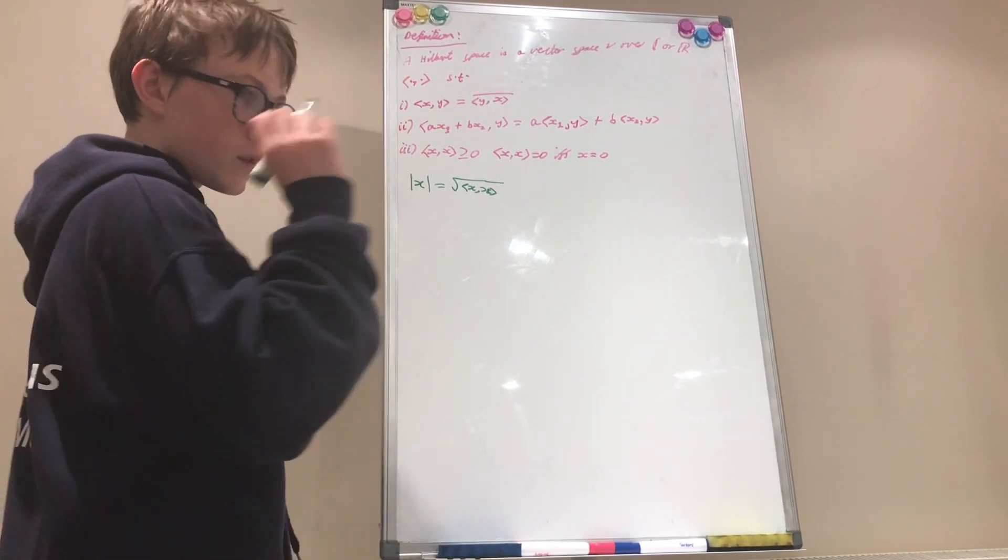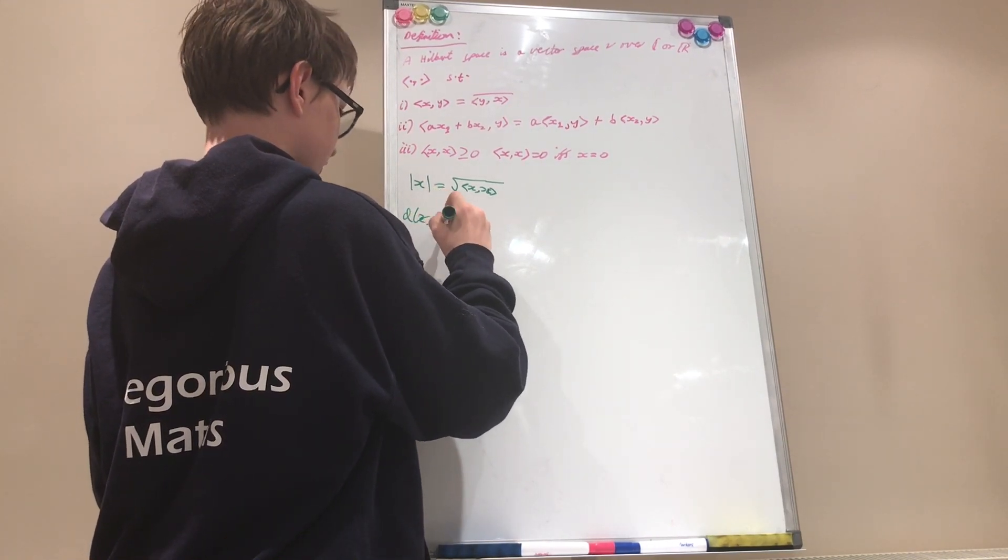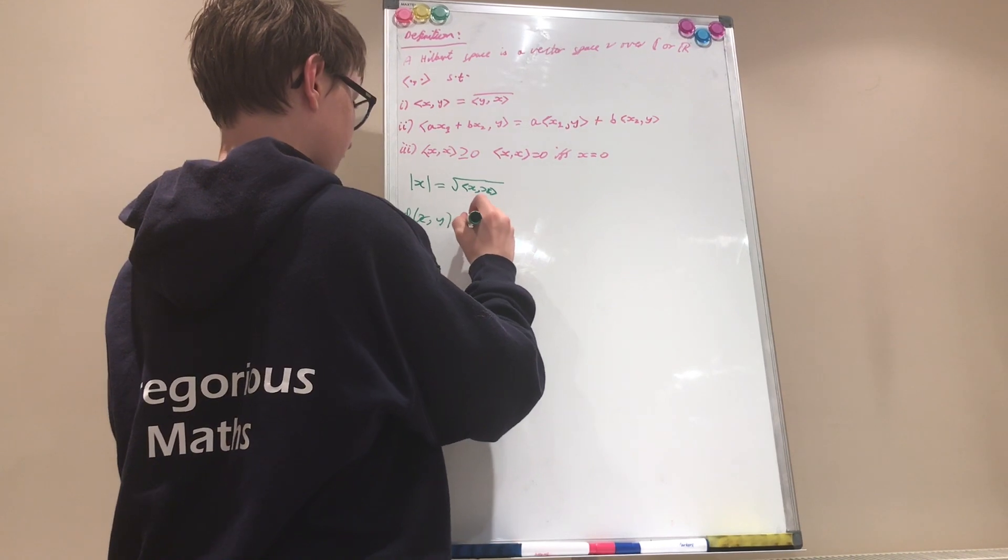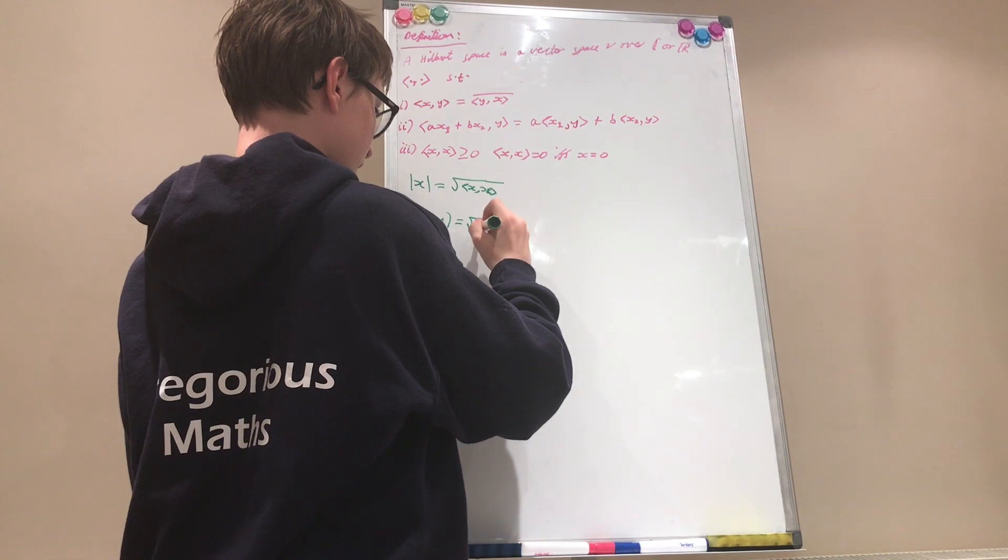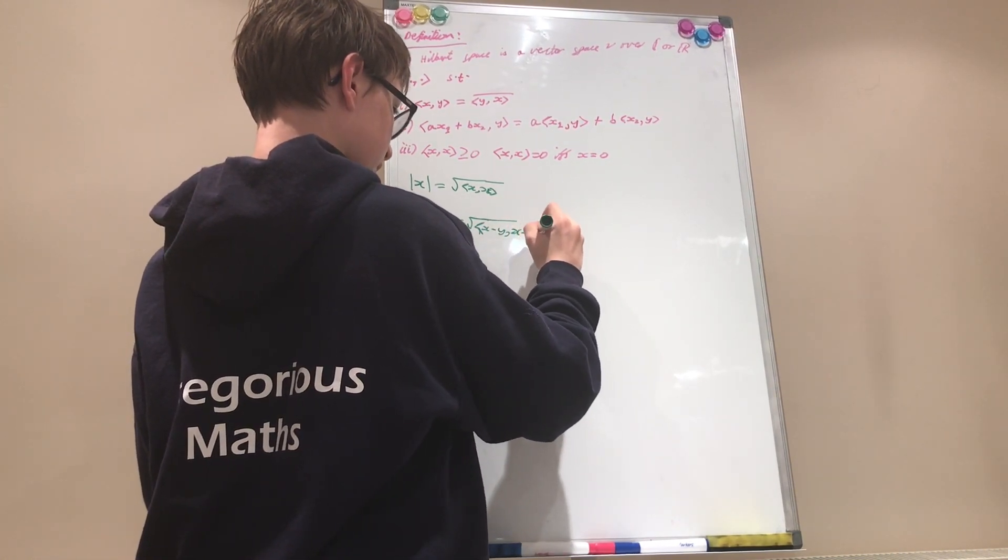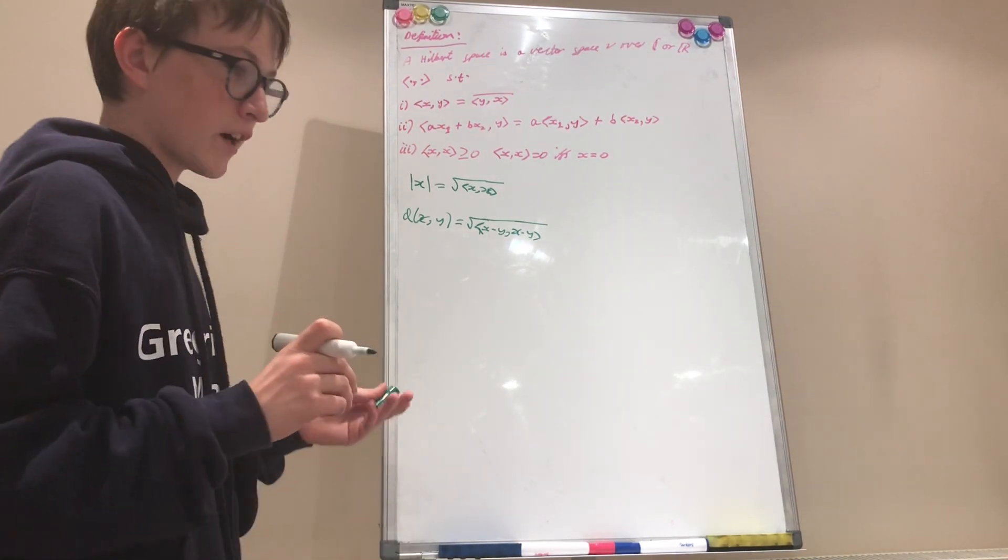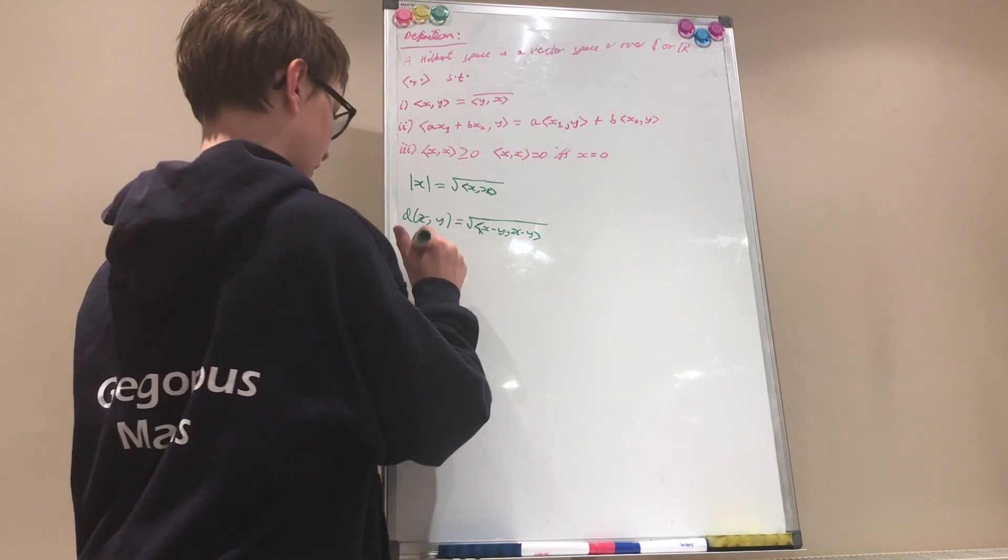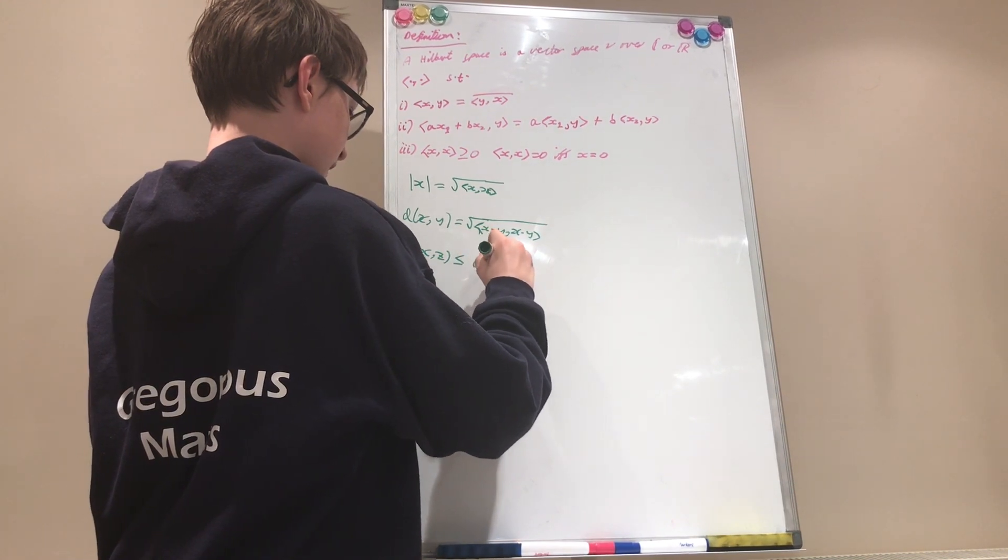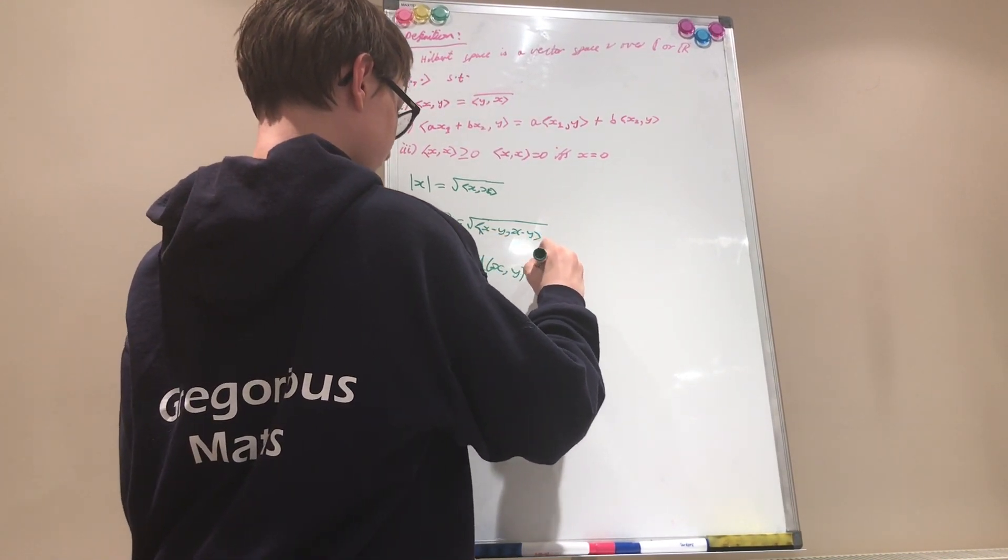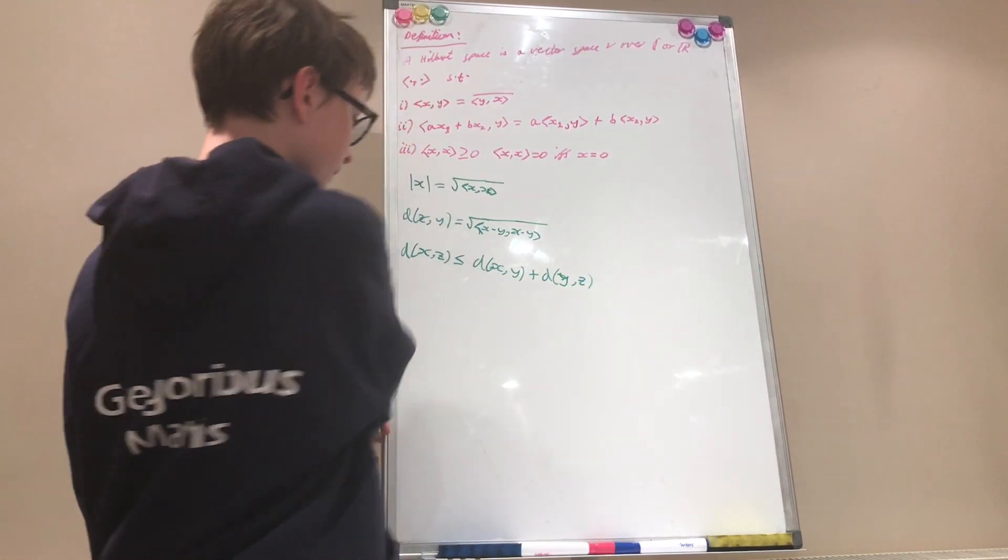Now we can actually define a distance function, distance metric, whatever you want to call it. d(x,y) is equal to the square root of (x minus y) inner product (x minus y). And this satisfies the triangle inequality, so d(x,z) is less than or equal to d(x,y) plus d(y,z).